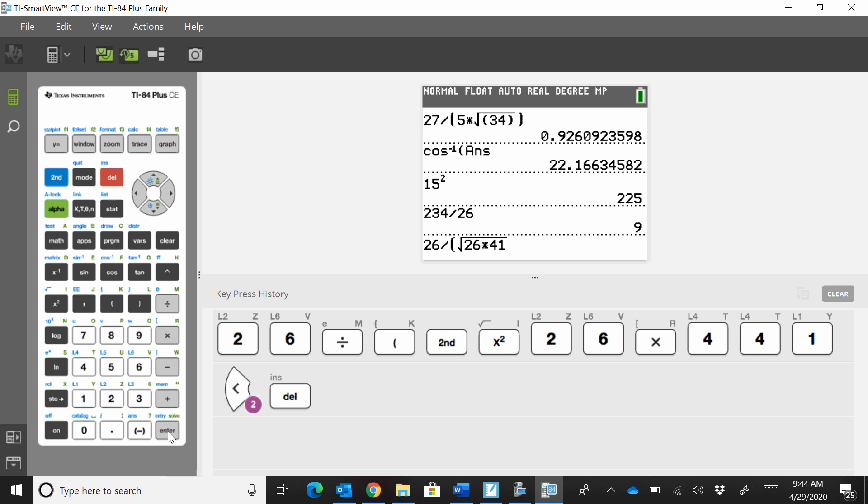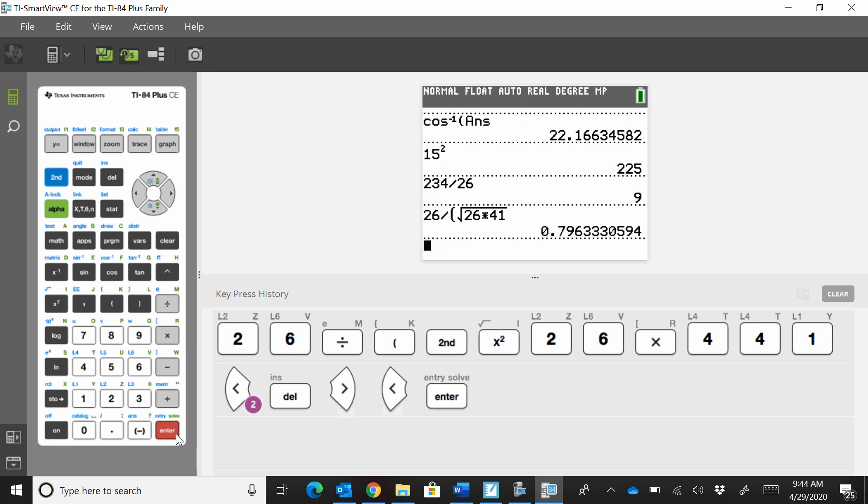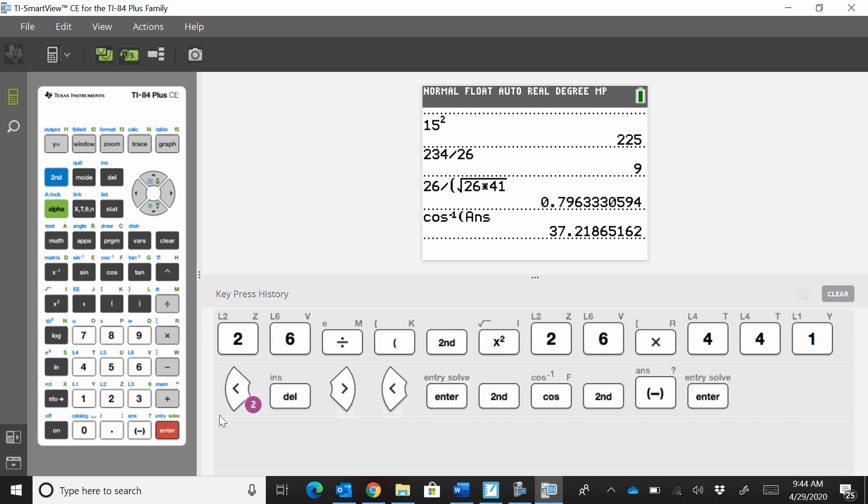And that gives us, let's go outside the radical, and that should do it. Okay, then we have to do the inverse cosine to find the angle. Now this is a positive value, so we learned in the other unit this should be an acute angle. And the answer is 37.22.